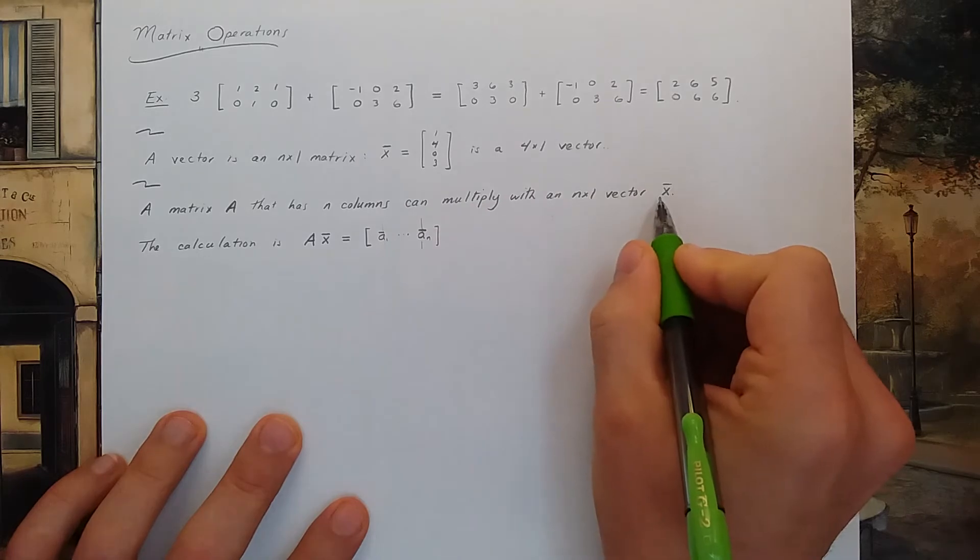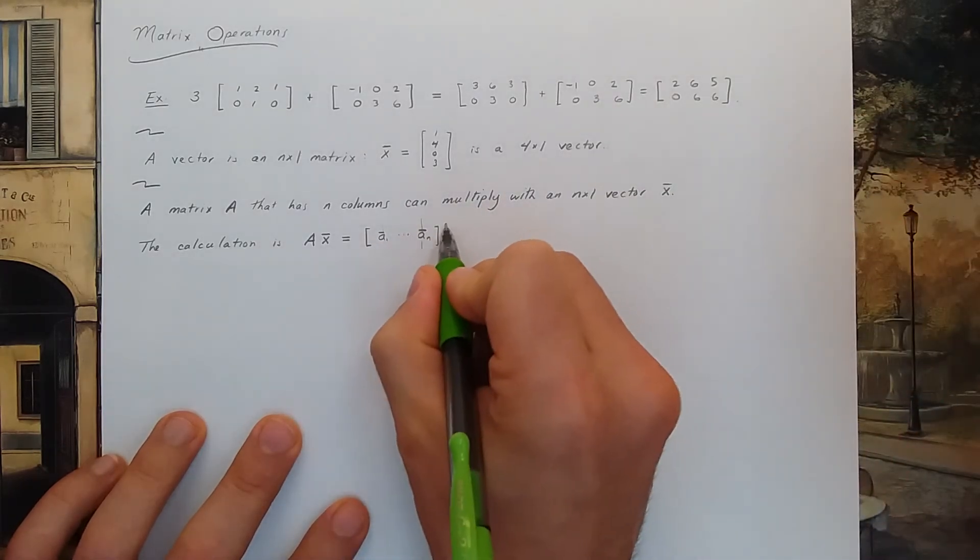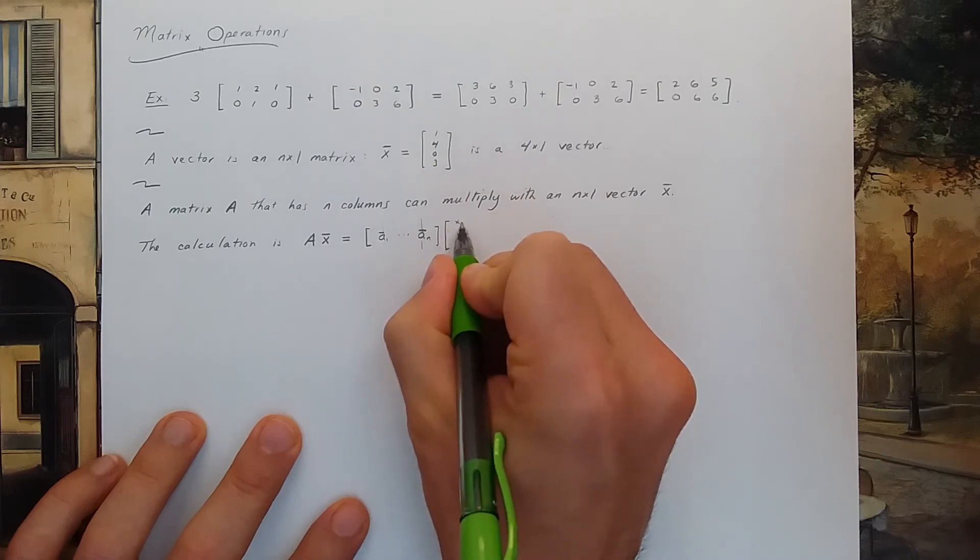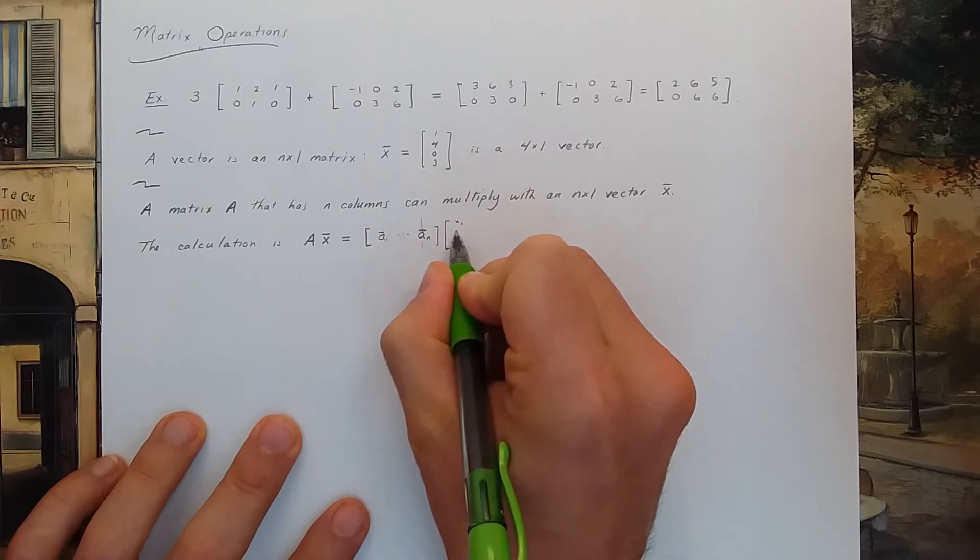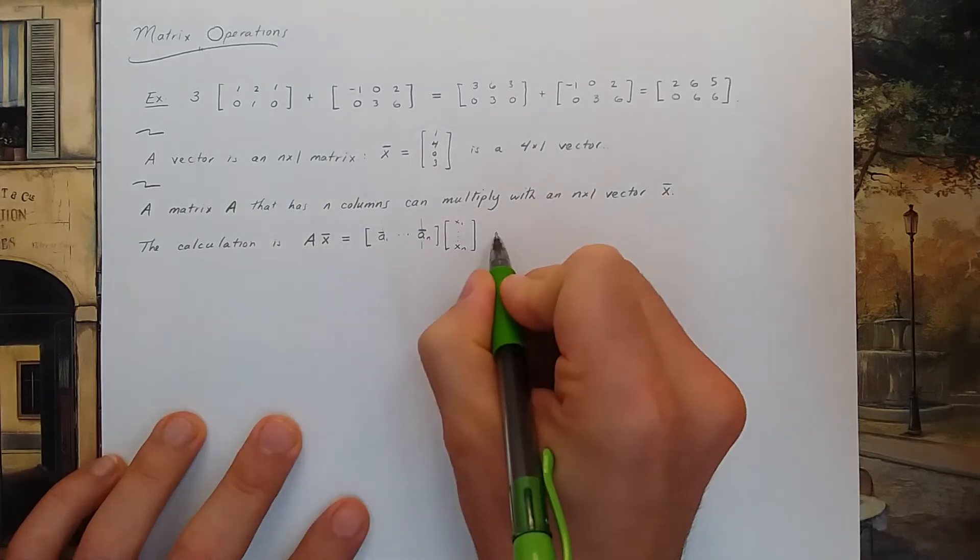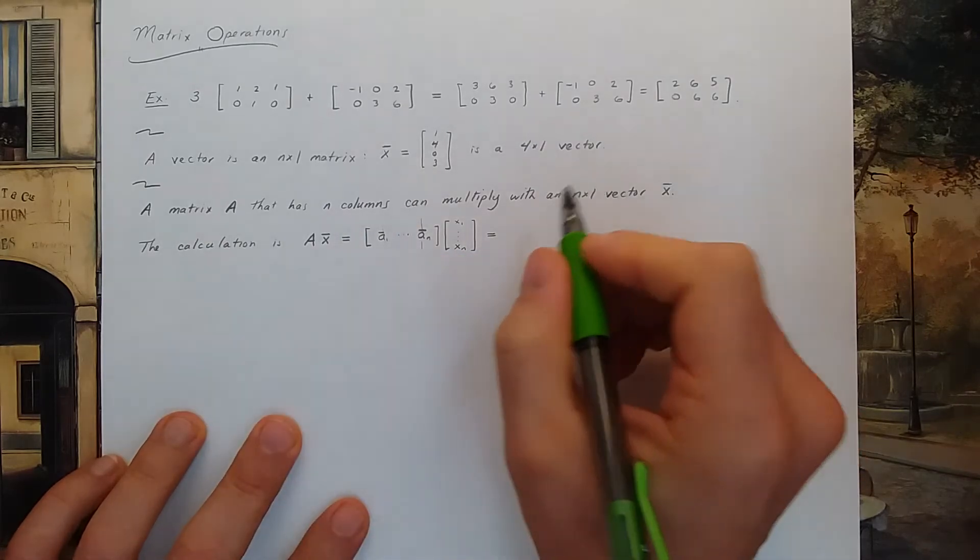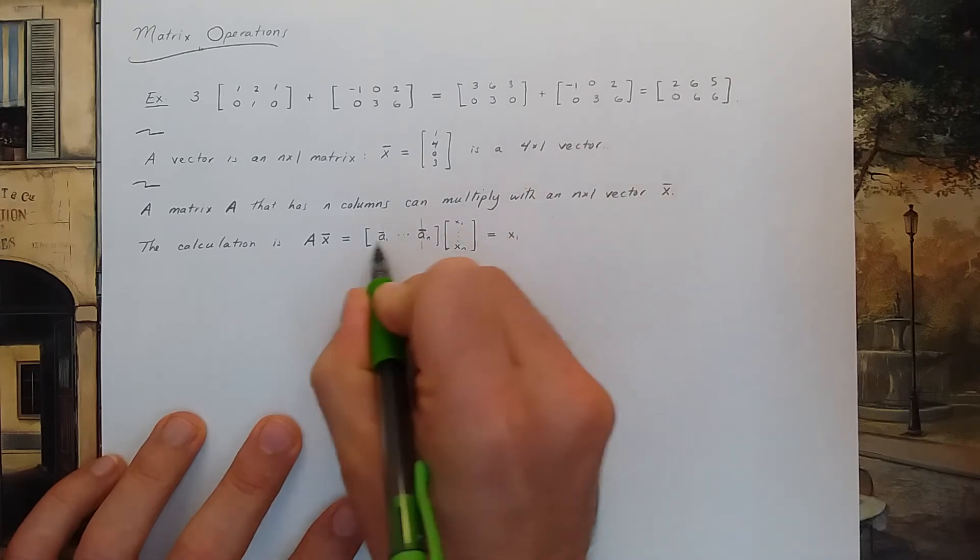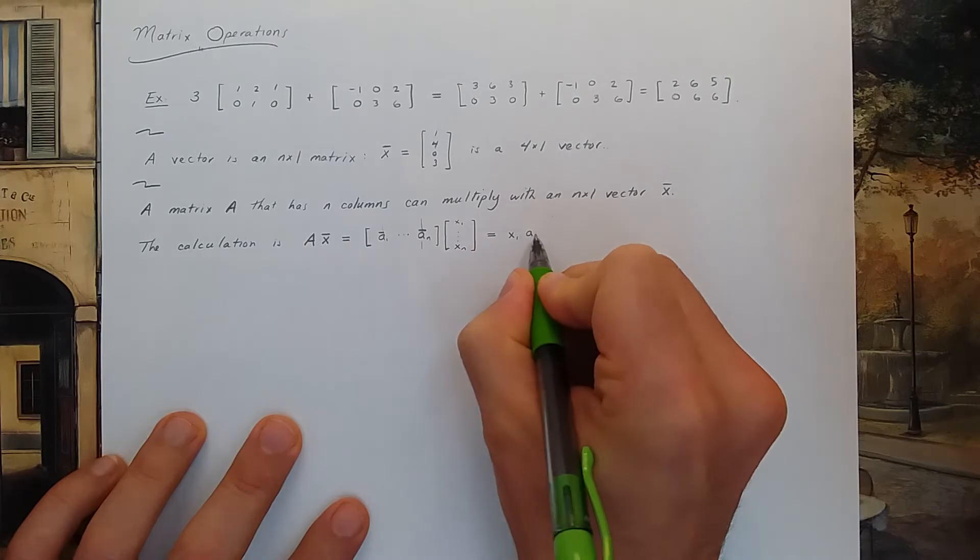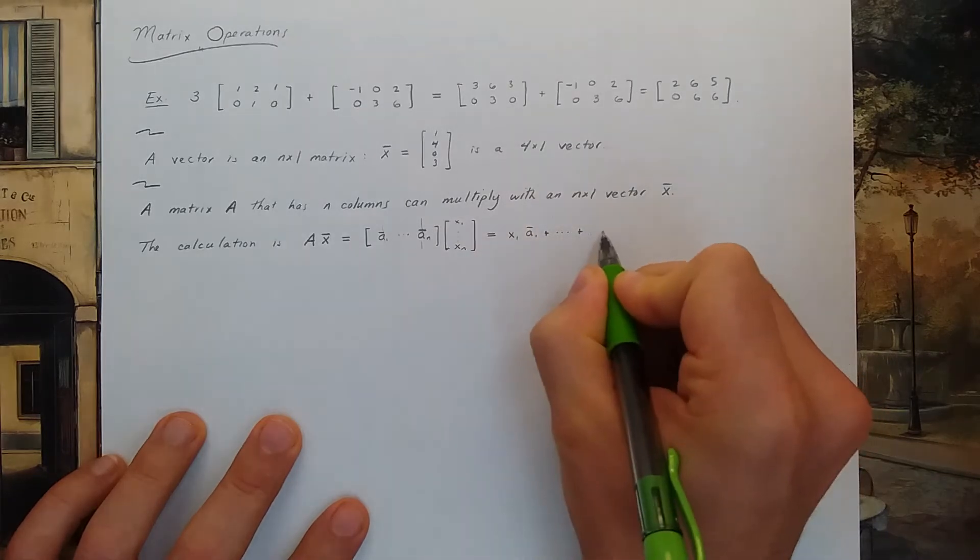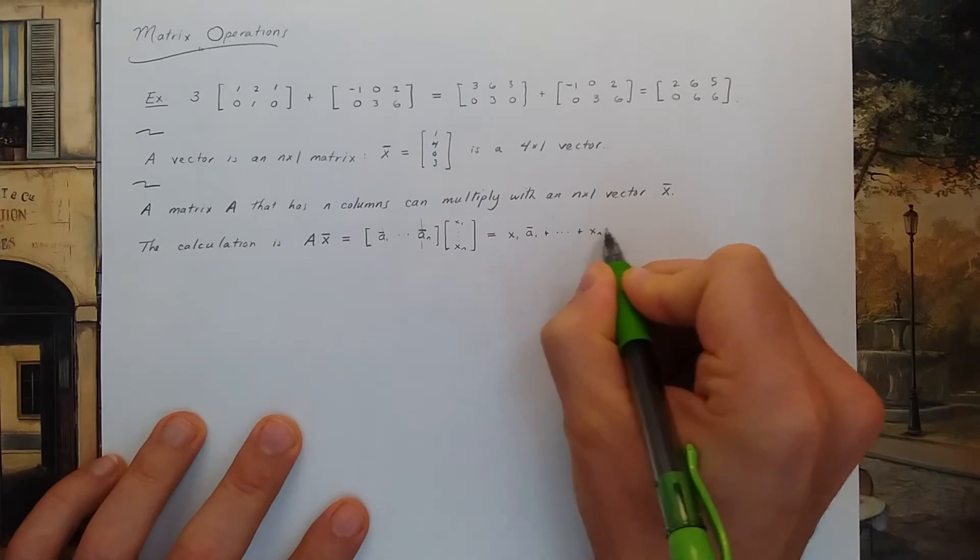And then the vector x is a vector as well. That means one column of numbers. Let's say that column of numbers is x1 through xn. So this matrix multiplication is defined to be the constant x1 times the vector A1 added with all these terms that look like a constant times a column vector.